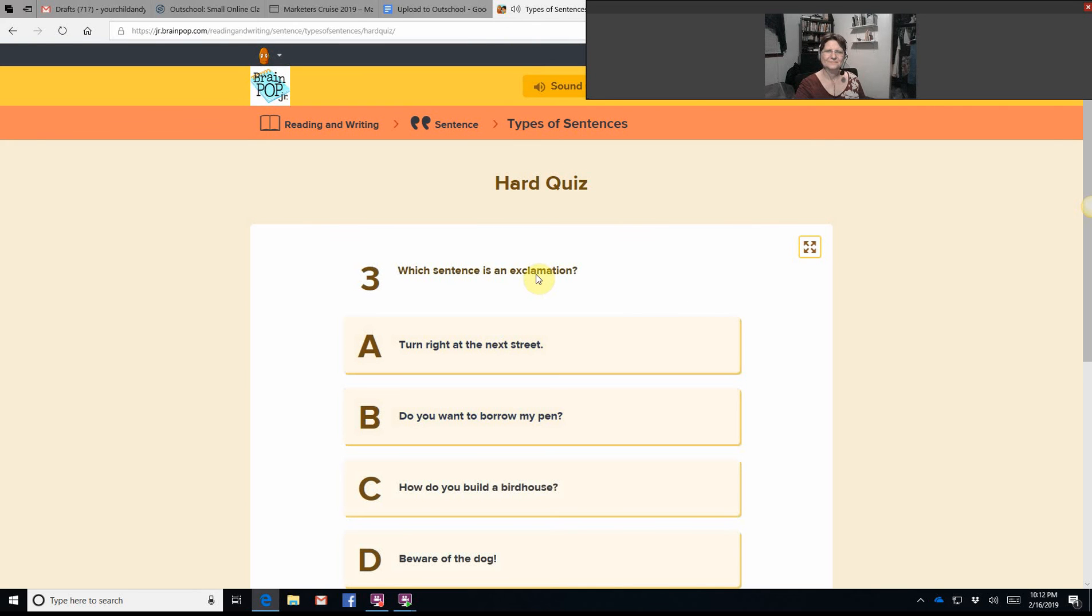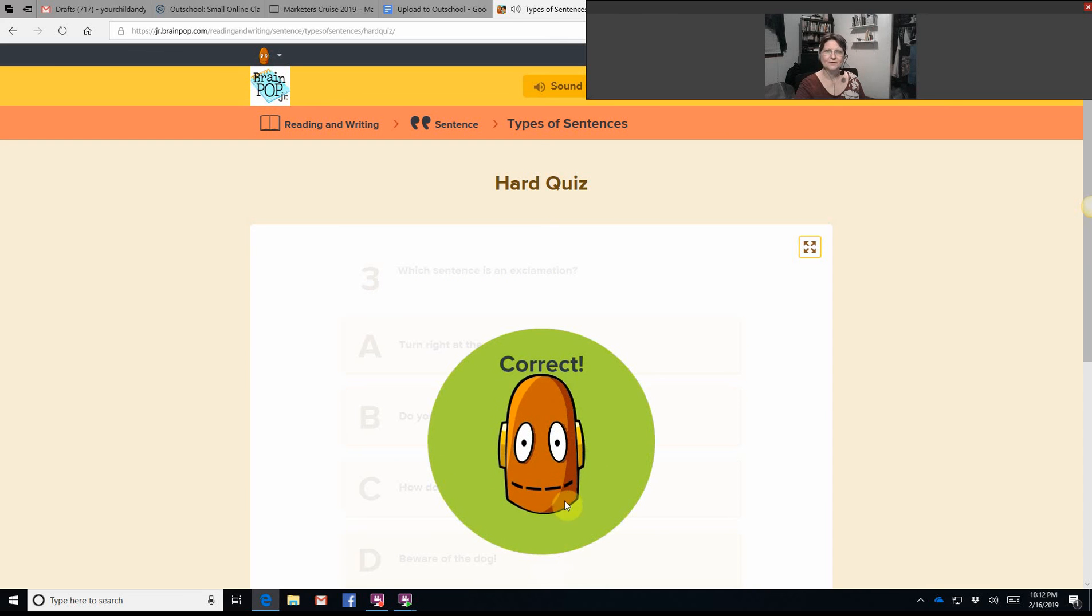Which sentence is an exclamation? Turn right at the next street. Do you want to borrow my pen? How do you build a birdhouse? Beware of the dog. An exclamation ends in an exclamation mark.